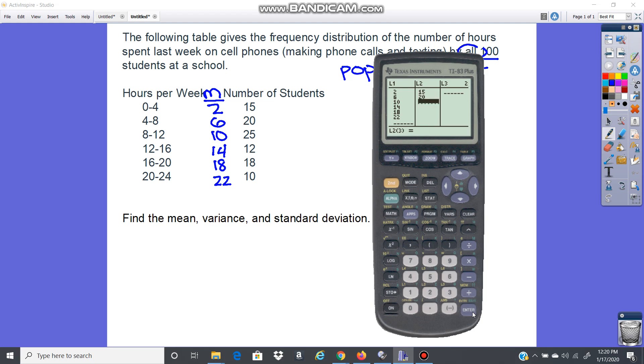Okay, and then I'm going to scroll over to list two and I'm going to put my frequencies in. 15, 20, 25, 12, 18, 10. Okay, my data is entered.